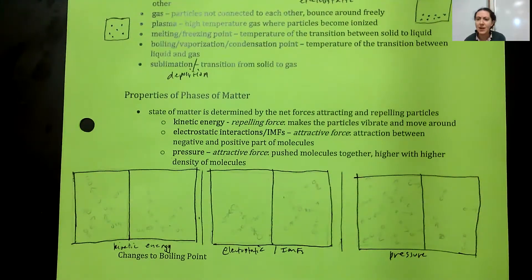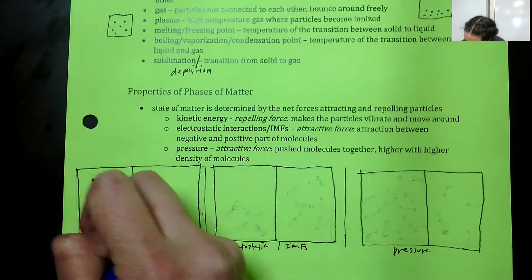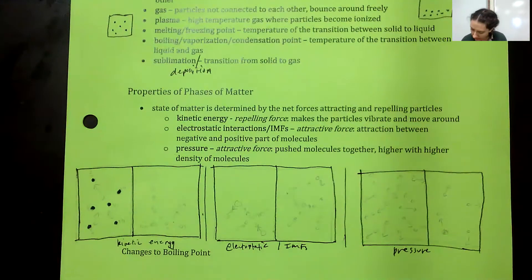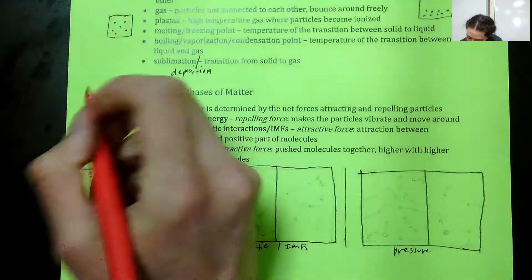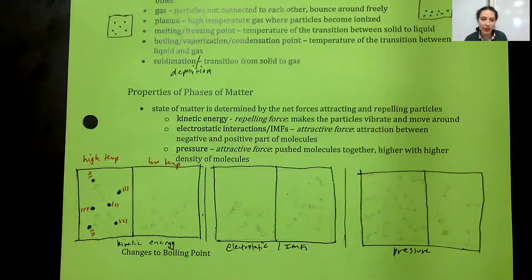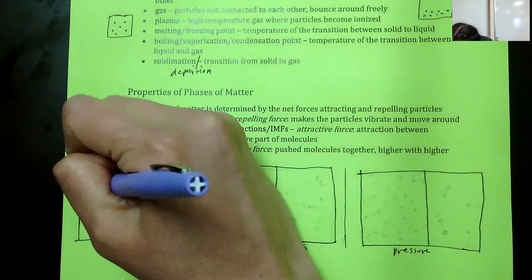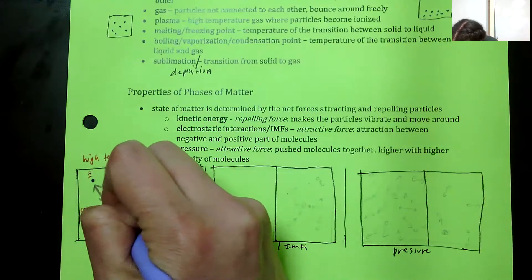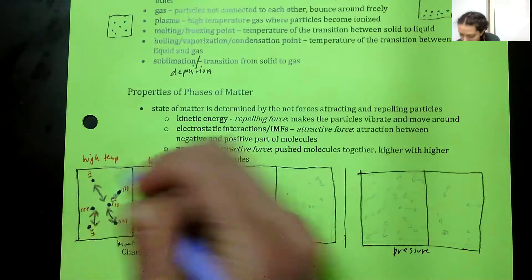I sketched this out in pencil and I'm going to fill it in. Imagine you've got little particles bouncing around — this is a higher temperature scenario, and I'm going to draw these vibrate-y, motion-y lines to represent kinetic energy. At high temperature, the particles are pushing away from each other pretty hard, with quite a lot of that repelling force.